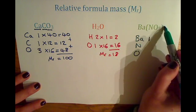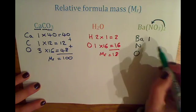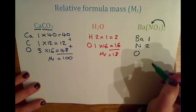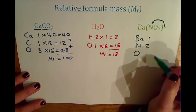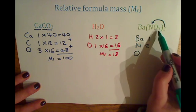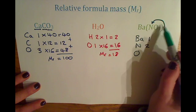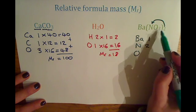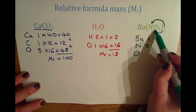Which is two atoms of nitrogen. And in the same way, without the bracket, there would only be three oxygens. But because it's in the brackets and there's a two outside, you need to multiply that by two.